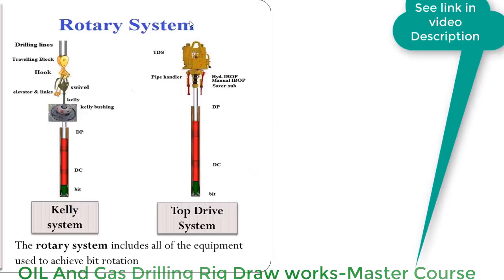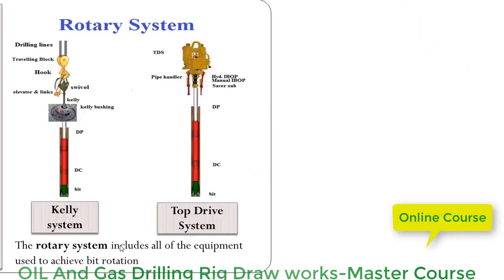The drilling rig rotary system includes all of the equipment used to achieve bit rotation. The rotary system can be of two types: the Kelly system and the top drive system. In the Kelly system, the rotary table provides power to the master bushing, which rotates the Kelly bushing, and the Kelly bushing turns the Kelly and drill string.